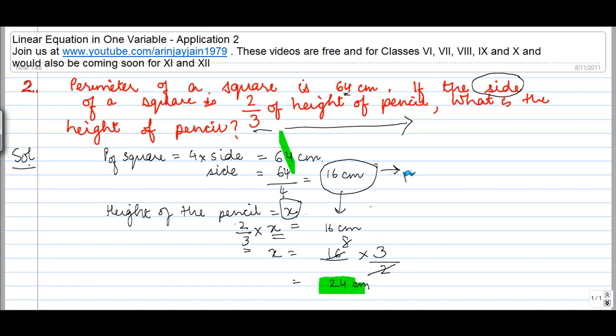Now, if you want, you can solve this equation the other way also. What you can do is 2 by 3 into x is equal to 16, so you can multiply both the sides by 3 upon 2. Why 3 upon 2? Because 3 upon 2 will cancel out this and this, both of them. And then you can multiply this side by 3 upon 2. The result, again, will be the same, which is 24 cm, which we have calculated here.